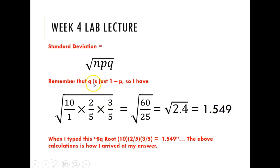Remember that q is just one minus p. So if p is two-fifths, q would be three-fifths. If p was seven-tenths, q would be three-tenths. You just subtract up from one.